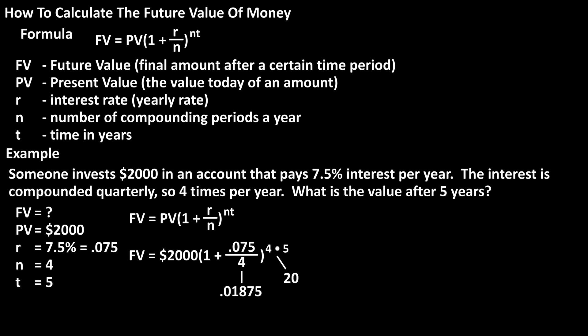.075 divided by 4 equals .01875, and 4 times 5 equals 20. Now we have future value equals $2,000 times the quantity 1 plus .01875, raised to the 20.